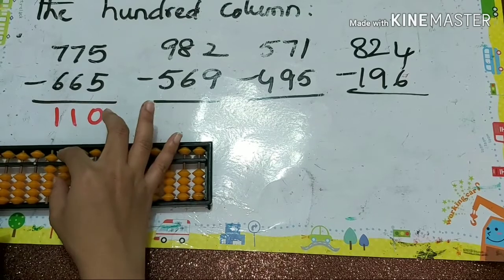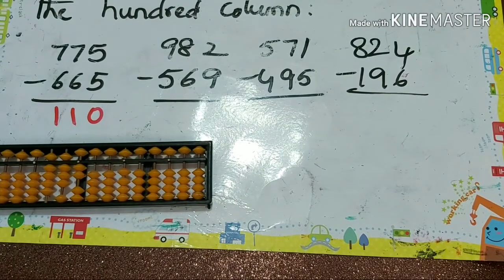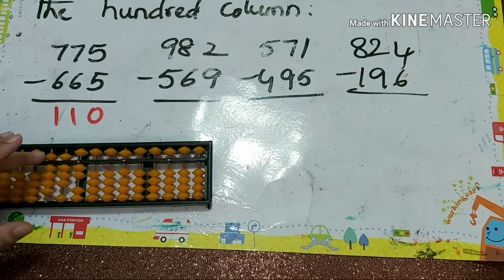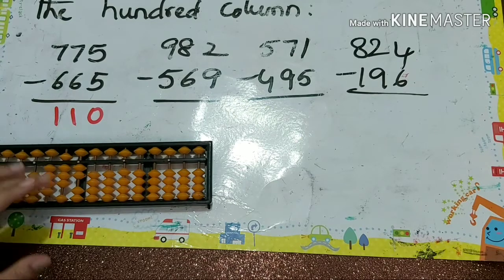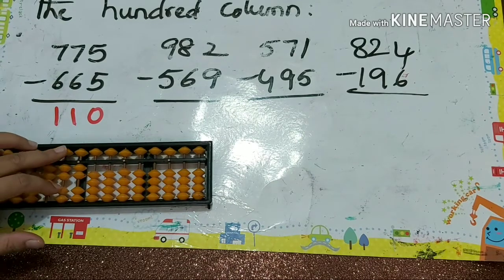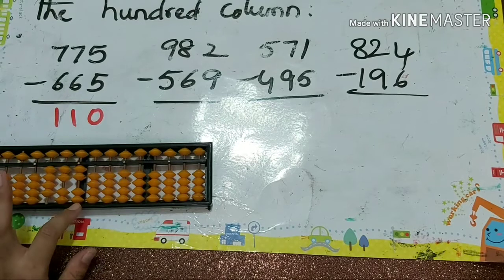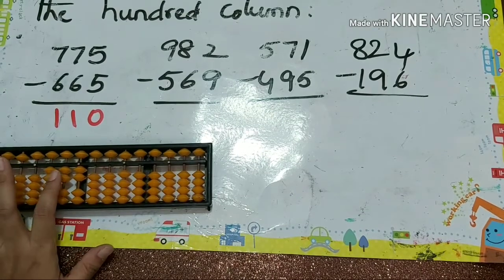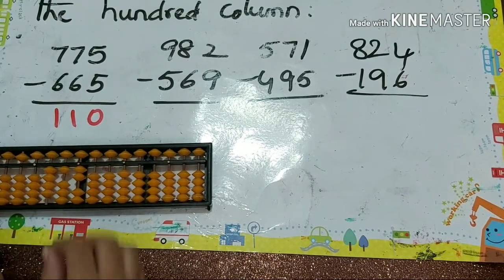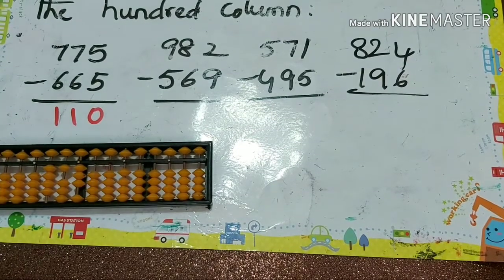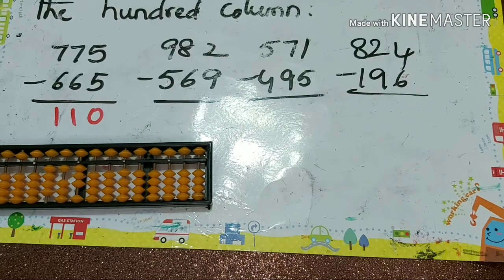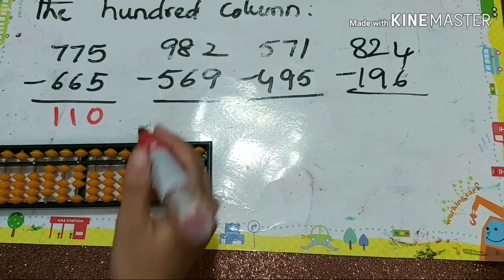Next one: 982 minus 569. Minus 5, then minus 6 direct. Next minus 9 — how to do minus 9? That is minus 10 plus 1. Answer is 413.